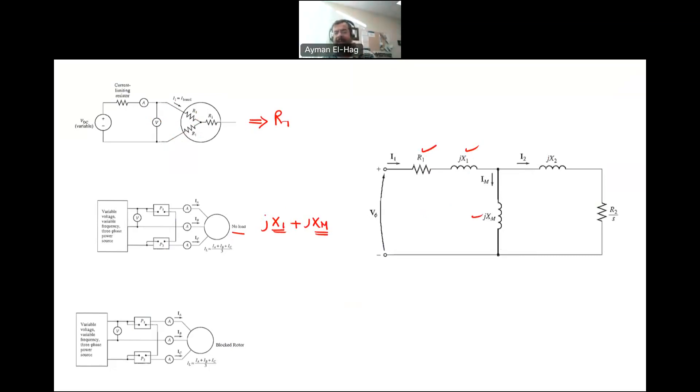So we are left with X2 and R2, and the ratio of X1 with respect to XM. Here comes the blocked rotor test. It will give us R1 plus R2 as a lump sum. From knowing R1, we can find R2.